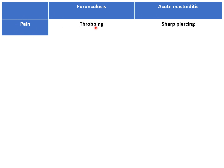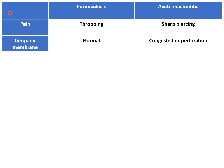The pain of furuncylosis is generally throbbing in nature, while for acute mastoiditis the pain may be of a sharp, piercing type.